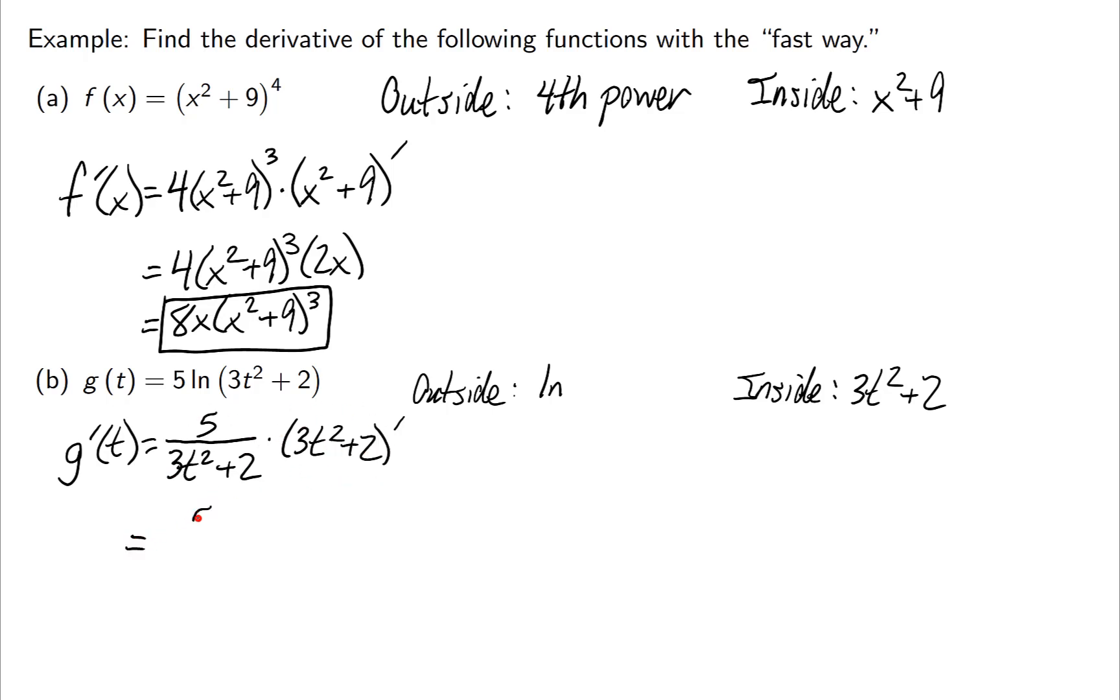And when I do that, I get 5 over 3t squared plus 2, and the derivative of 3t squared plus 2 is 6t, which I can then combine to get 30t over 3t squared plus 2.